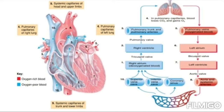In this diagram, starting from the right side: the right atrium contains deoxygenated blood, which moves through the tricuspid valve into the right ventricle. From the right ventricle, through the pulmonary valve, it moves into the pulmonary trunk and pulmonary arteries, traveling into the lungs, where in the pulmonary capillaries the blood loses CO2 and gains oxygen.